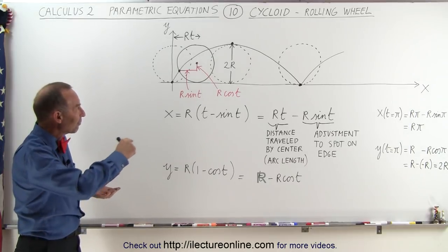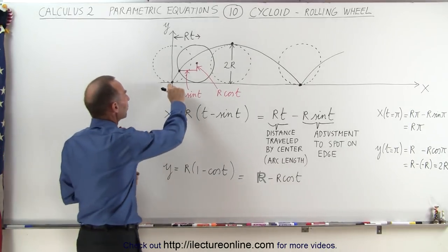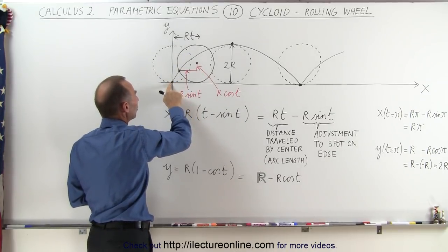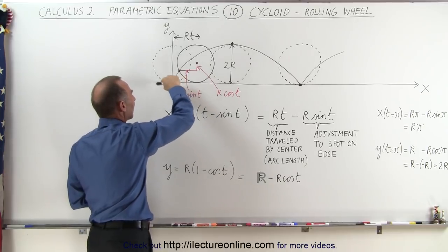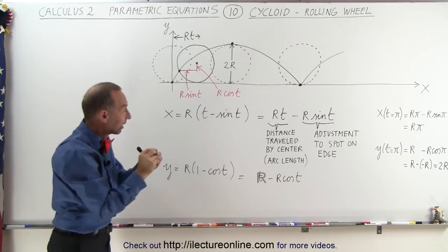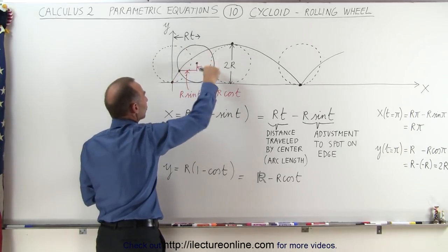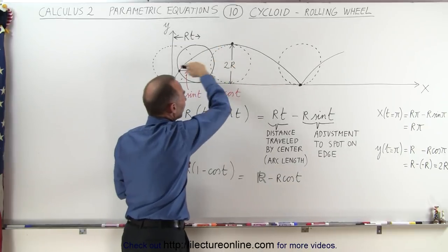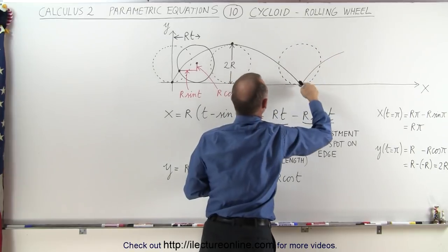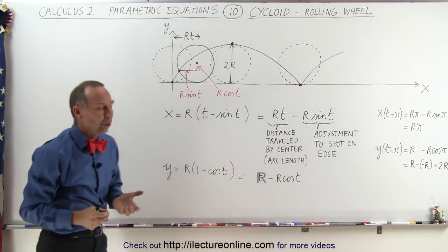What we have here is what we call a rolling wheel. If we take a point on the rolling wheel — say the wheel is right here so that the bottom of the wheel is at the origin, the xy origin right here — and then the wheel starts rolling, we keep track of where that point is that started at the origin. You can see that the point on the circle, as it's rolling from left to right, will make this particular shape indicated by this curve right here.